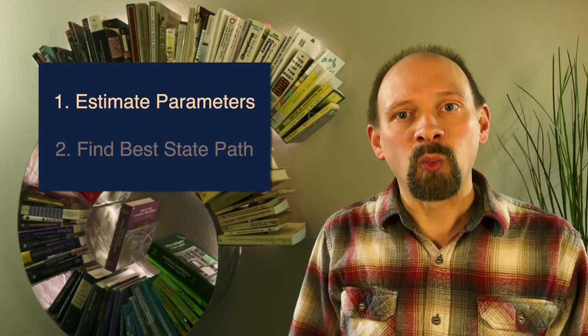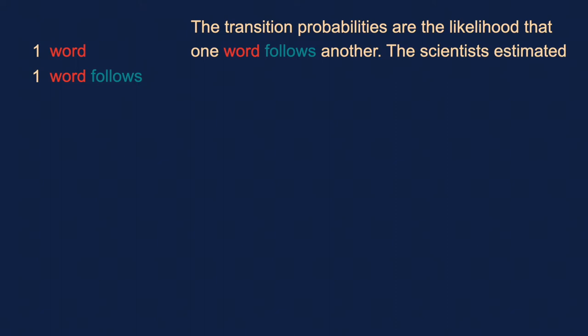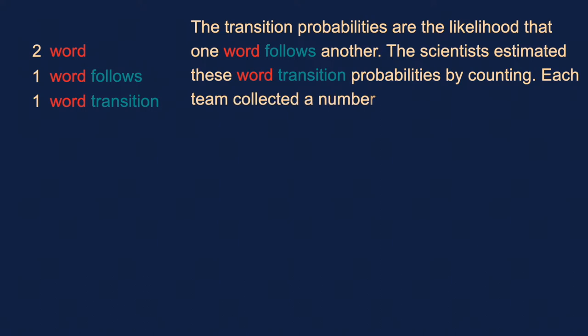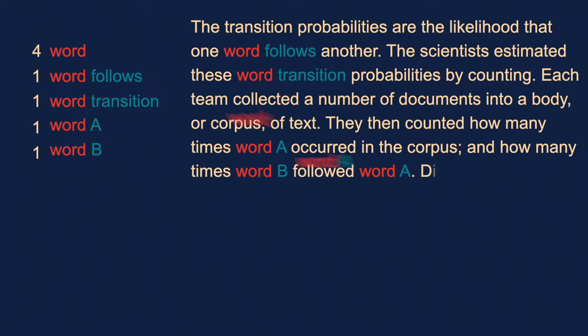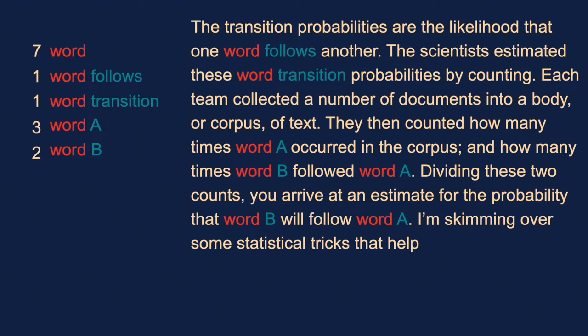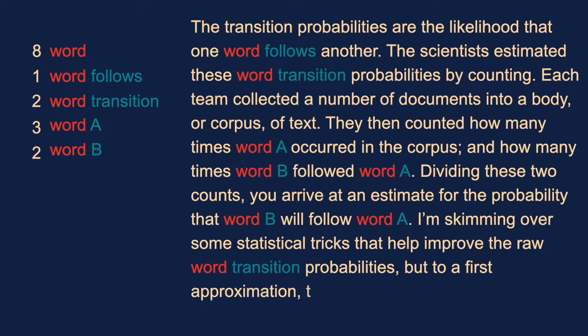When converting brain signals into text, since the states are the words that the paralyzed patient is attempting to produce, the transition probabilities are the likelihood that one word follows another. The scientists estimated these word transition probabilities by counting. Each team collected a number of documents into a body or corpus of text. They then counted how many times word A occurred in the corpus, and how many times word B followed word A. Dividing these two counts, you arrive at an estimate for the probability that word B will follow word A. I'm skimming over some statistical tricks that help improve the raw word transition probabilities, but to a first approximation, the state transition probabilities are literally just word counts.